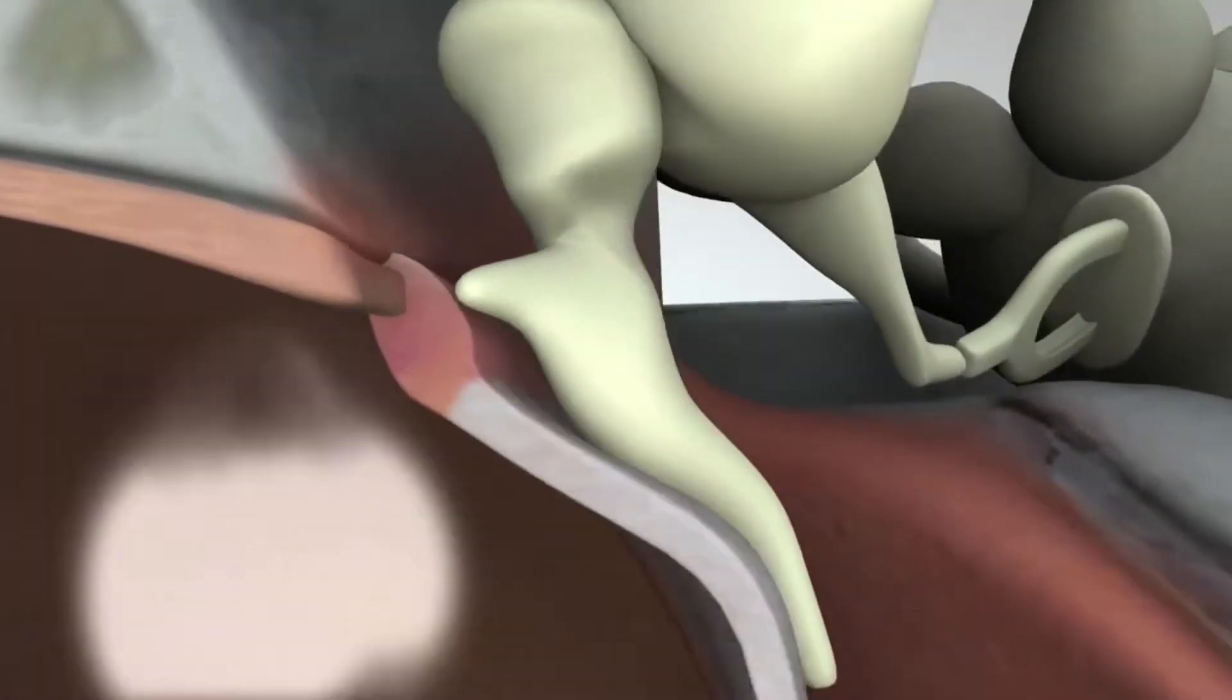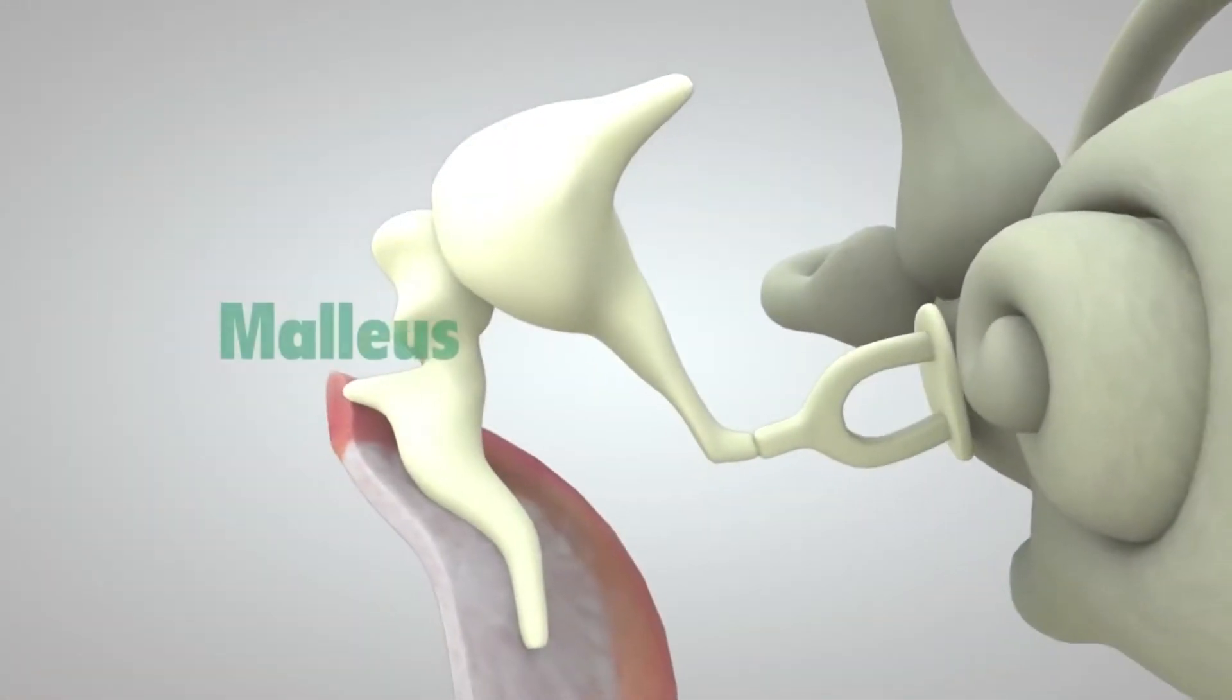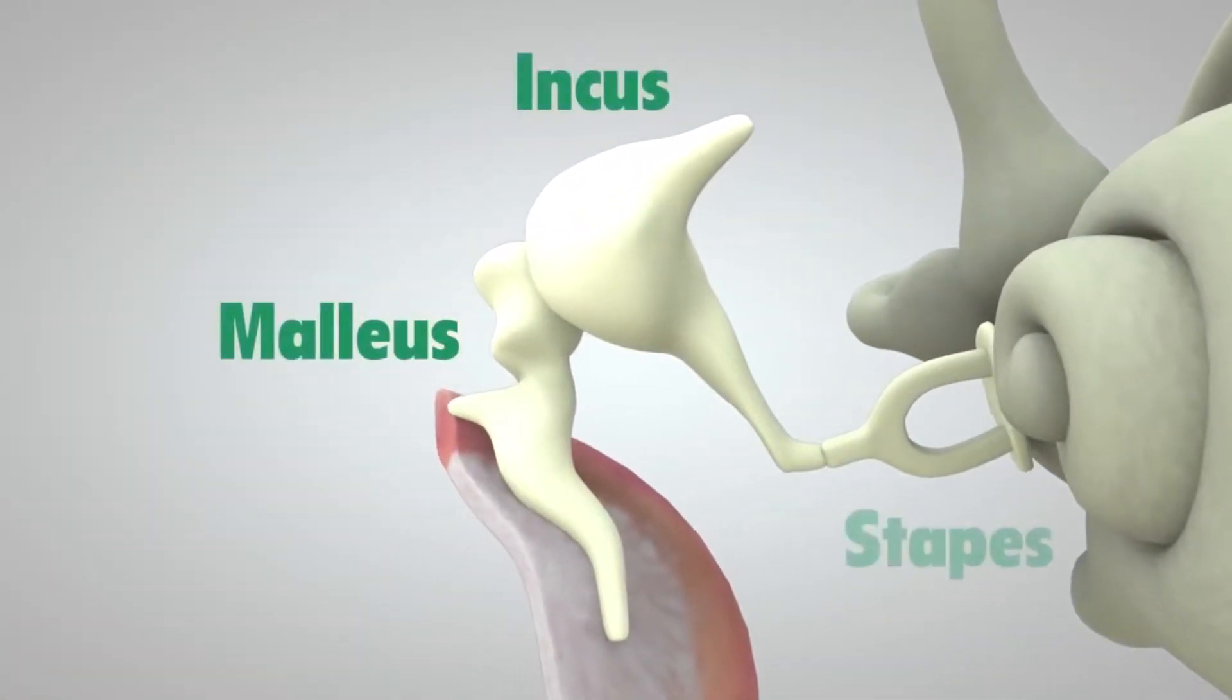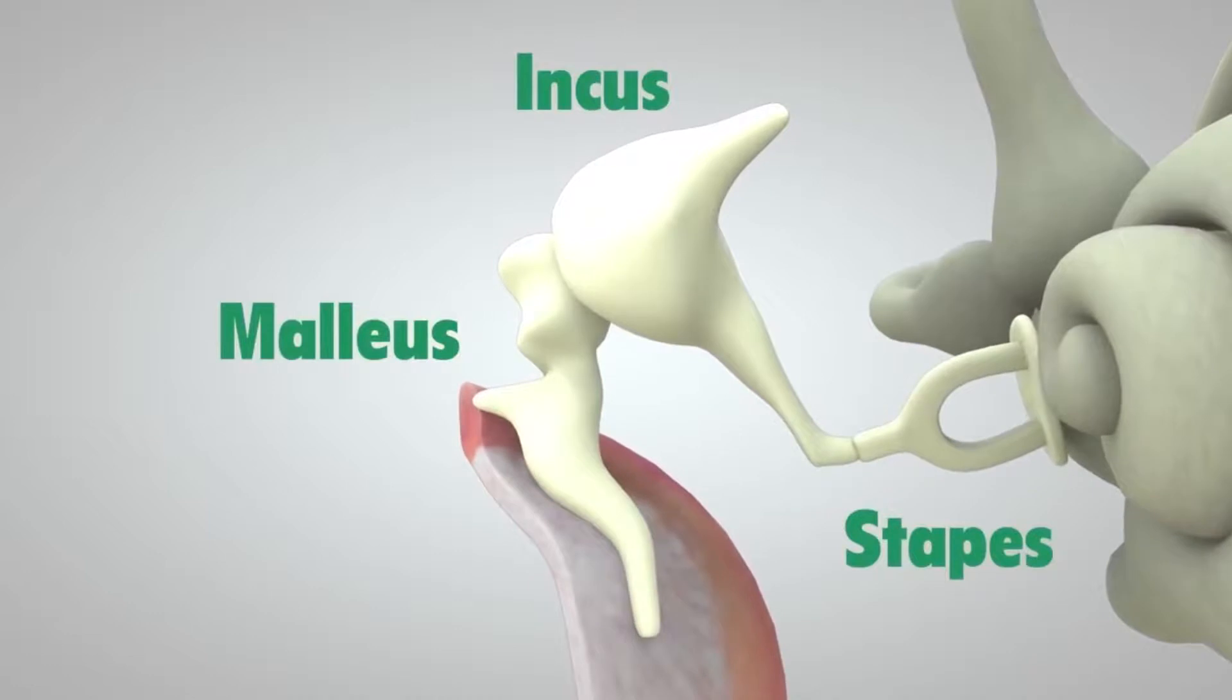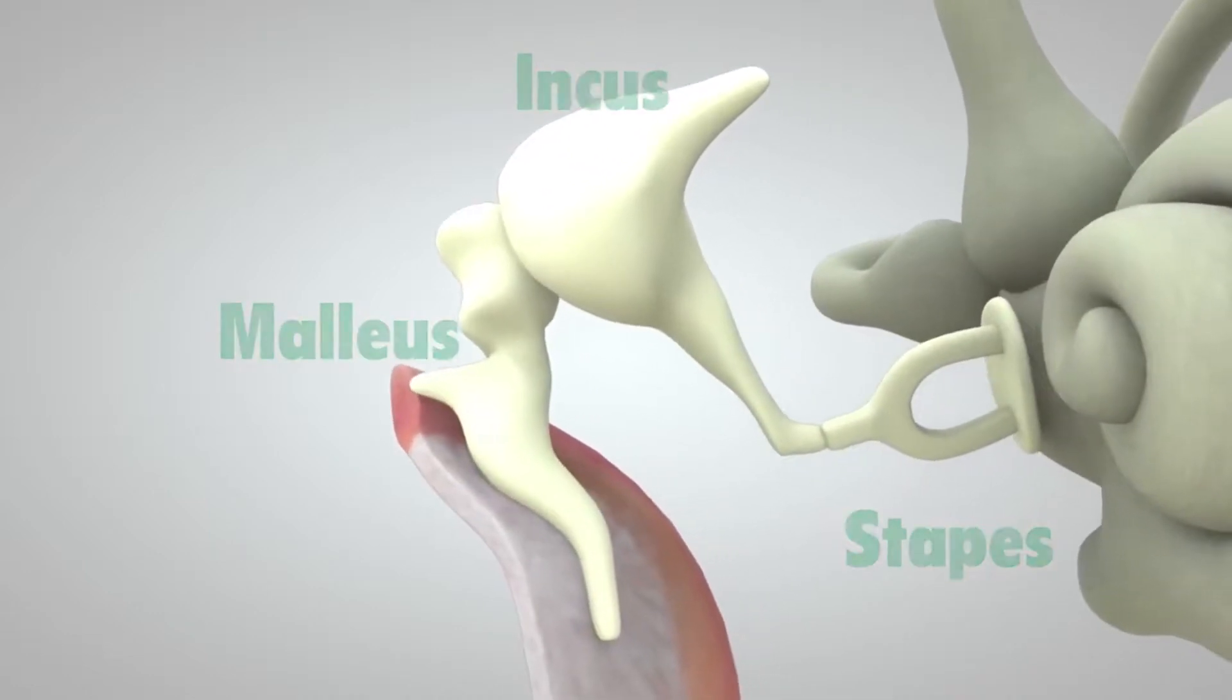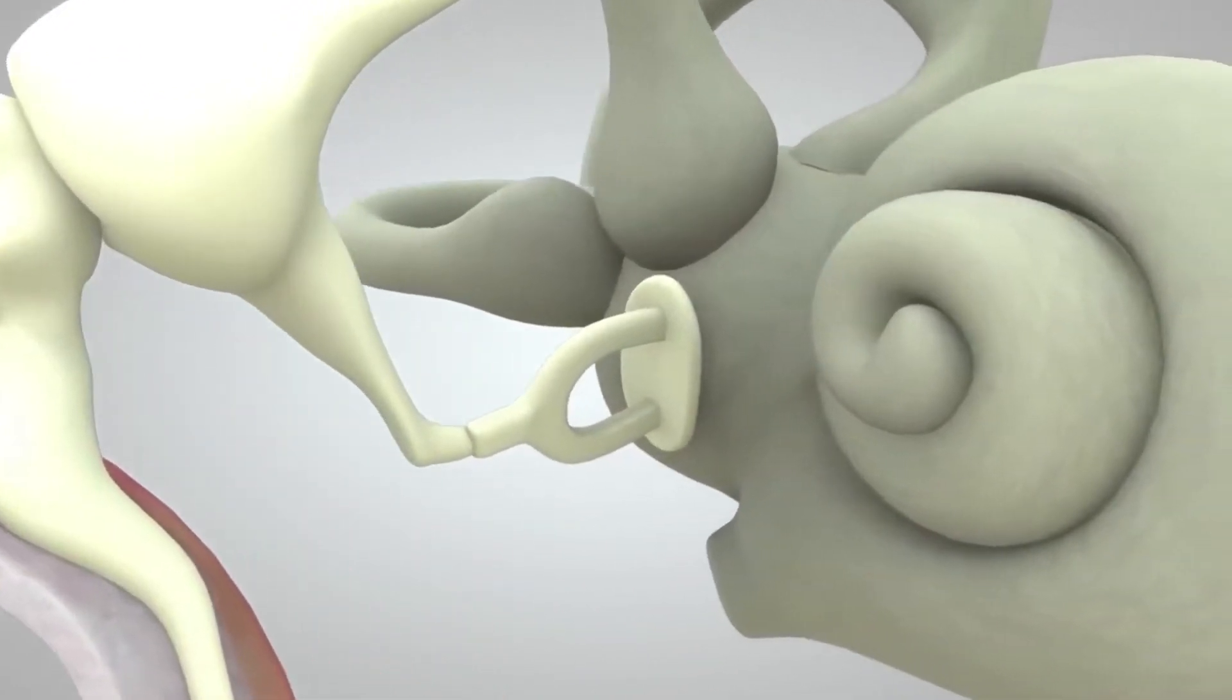which in turn vibrates three tiny bones called the malleus, incus, and stapes. These bones amplify or increase the sound vibrations and send them to the cochlea.